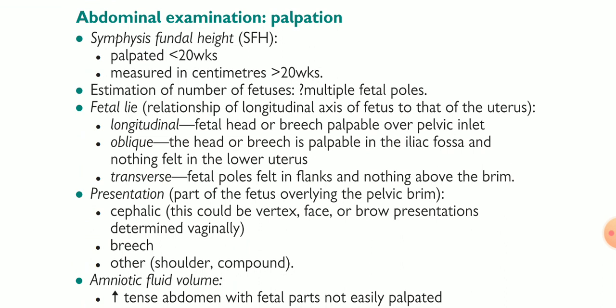The second part is the abdominal examination of the pregnant lady. Number one is the symphysis fundal height, which is used to measure the height of the uterus. It starts from the pubic symphysis and goes up to the xiphoid process from weeks 36 to 42. We palpate below 20 weeks and measure in centimeters above 20 weeks, using a tape measure from the xiphoid process to the fundus. We can also estimate the number of fetuses by feeling multiple fetal poles.